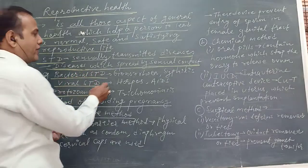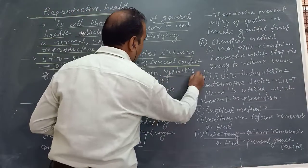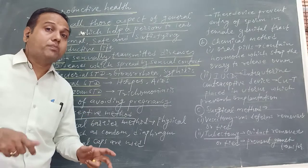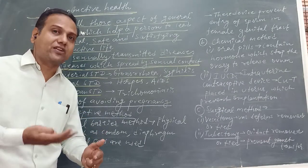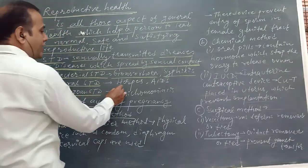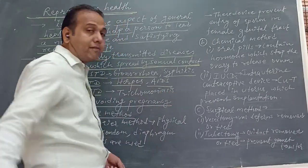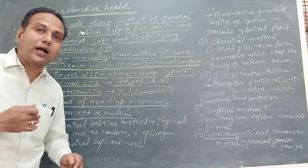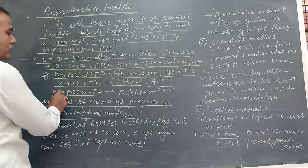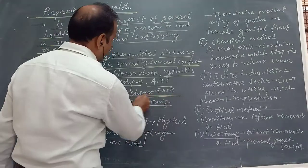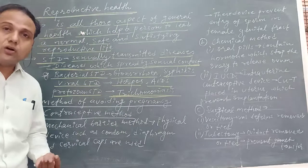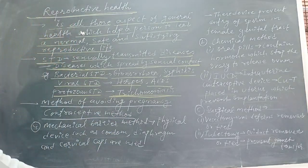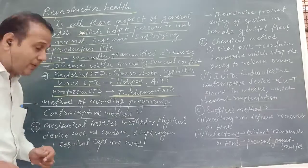Examples of STDs include bacterial STDs, viral STDs, and protozoan STDs. Bacterial STD examples are gonorrhea and syphilis, which are spread by bacteria. Viral STD examples are herpes and AIDS, which are spread by virus. Protozoan STD example is trichomoniasis.